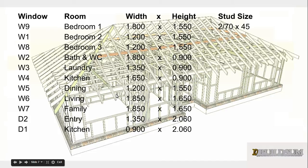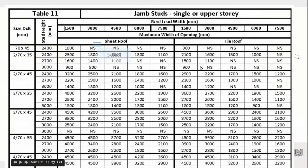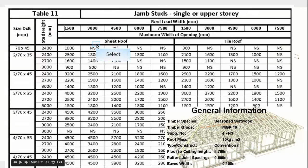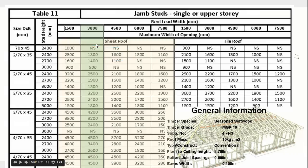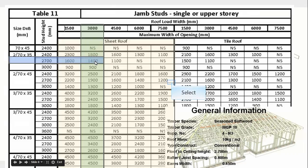Coming down to the next one, we've got a 1200 wide opening — the height is 1550 but that doesn't matter; it's 1200 wide. Going back to the table, making sure we have the sheet roof column and the right roof load width, we come down to 2.7 high and 1400, so we can use that entry. The timber size is two 70 by 35s this time.